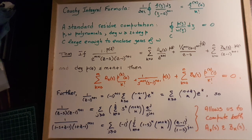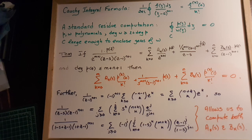This video gives the outline of a proof of an interpolation formula for polynomials where the data is given at z equals 0 and at z equals 1. The data is the values of the polynomial at z equals 0 and its derivatives up to the nth derivative, and the values of the polynomial and its derivatives up to the nth derivative at z equals 1.